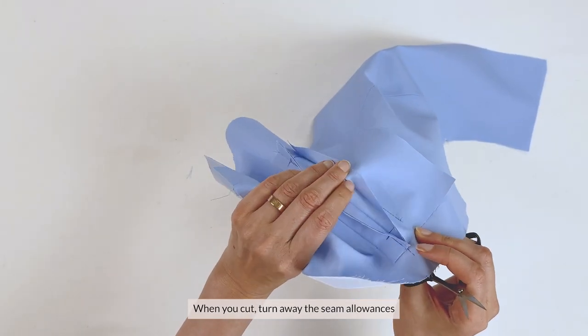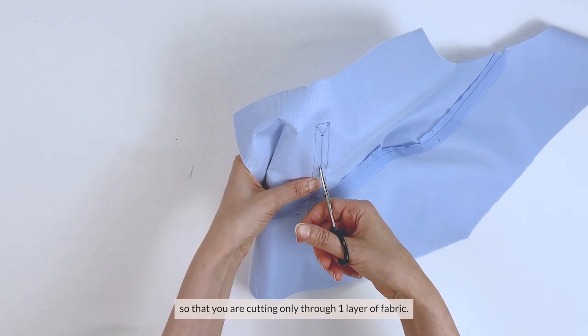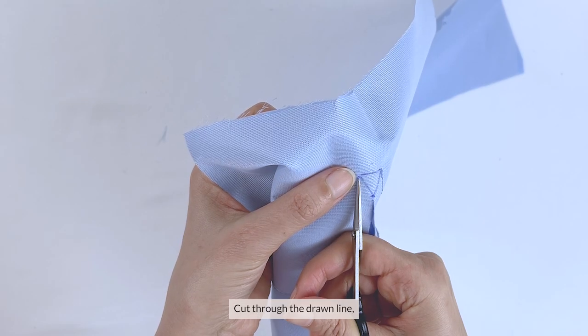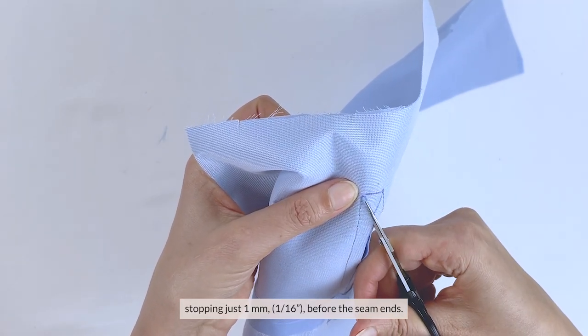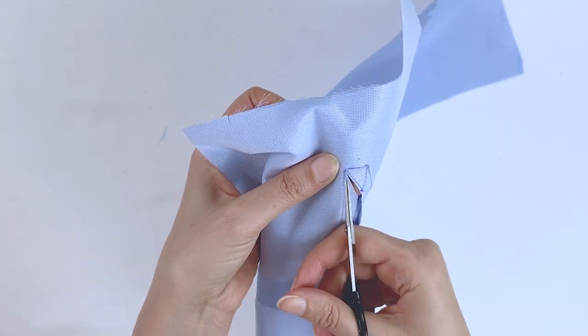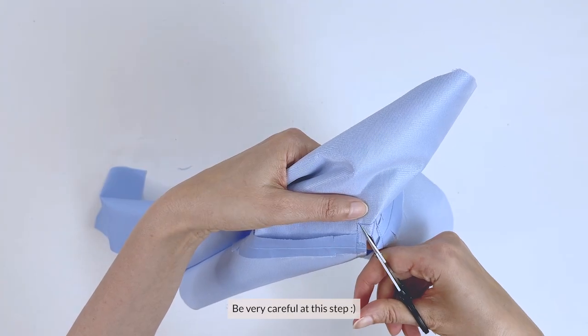When you cut, turn away the seam allowances of the welt and pocket back so that you are cutting only through one layer of the fabric. Cut through the drawn line, stopping just 1 mm or 16th of an inch before the seam ends. Do not cut through the seam, you need to see the guidelines. And be very careful at this step.